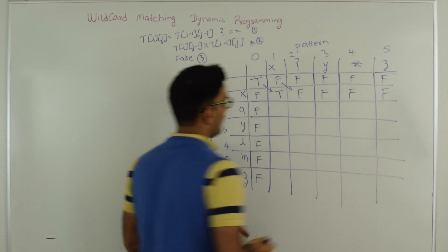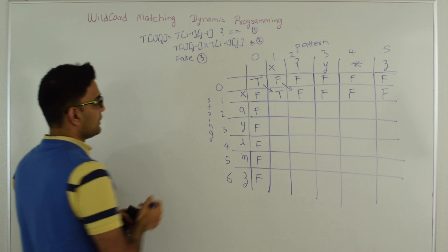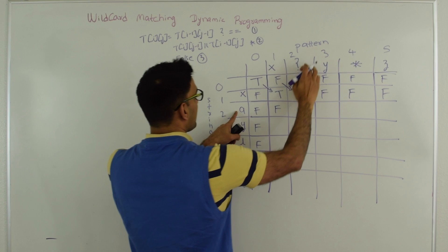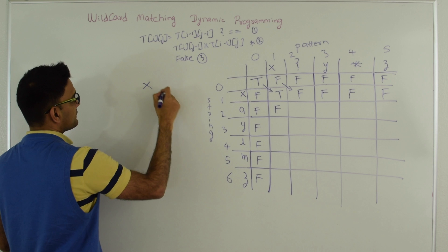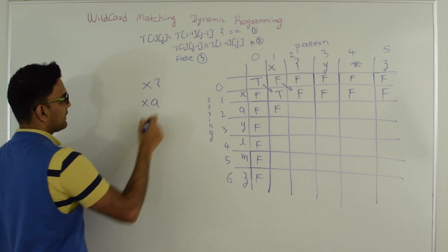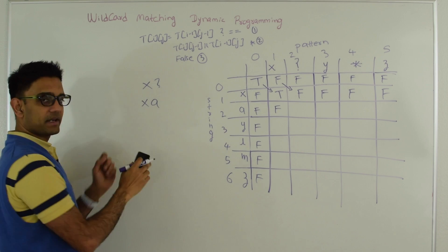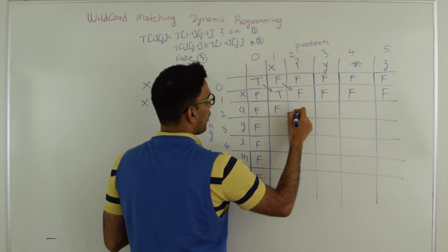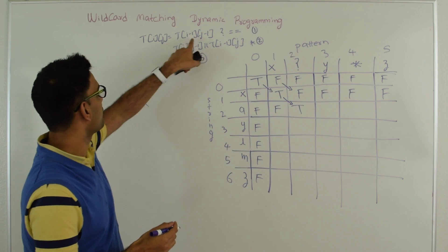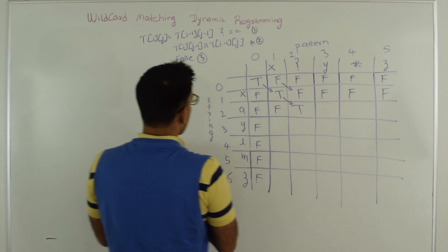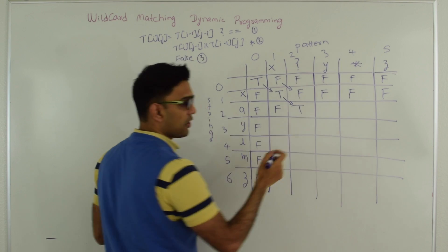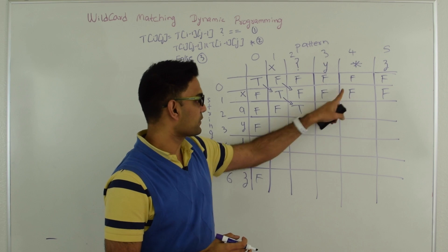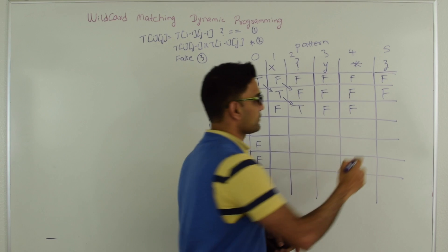Next let's fill the second row. A and X are not the same, so T[2][1] is false. For A and question mark, we fall into condition 1. Pattern is X?, string is XA — question mark can match anything, so we remove the question mark and A. X and X match, and T[1][1] is true, so T[2][2] is also true. Y and A are not same so T[2][3] is false. For the star at T[2][4], we look left and top — both false, so this is false. A and Z are not same, so T[2][5] is also false.